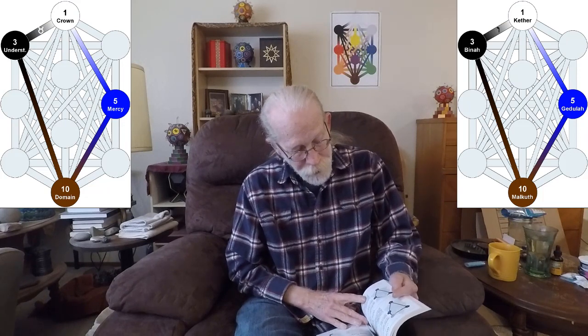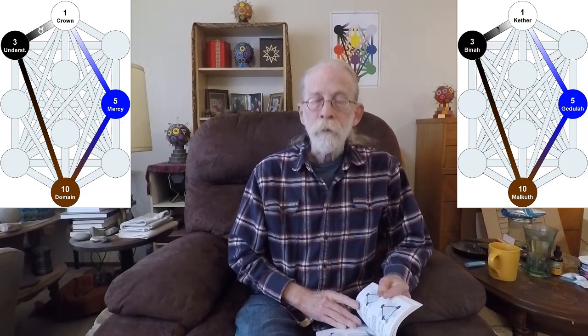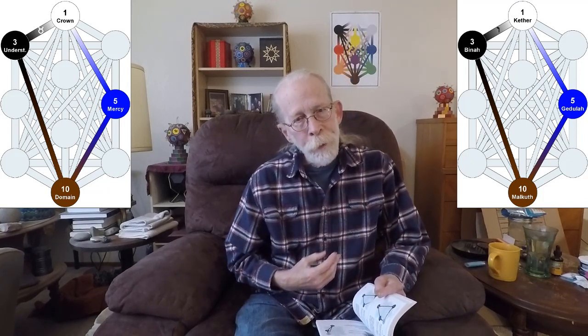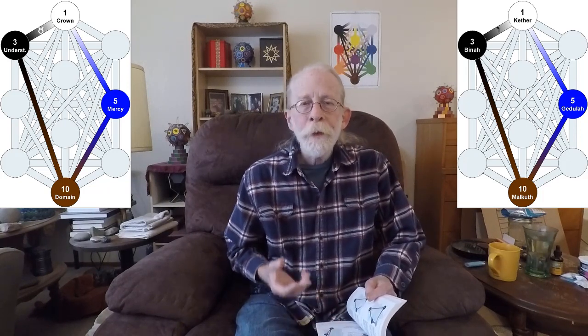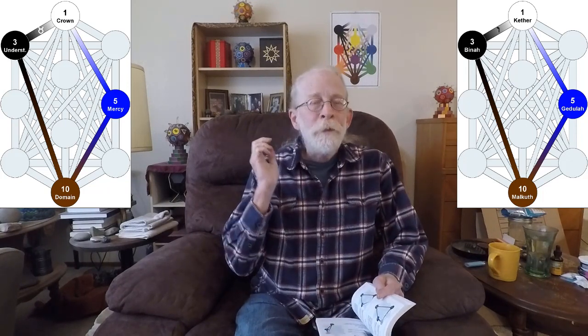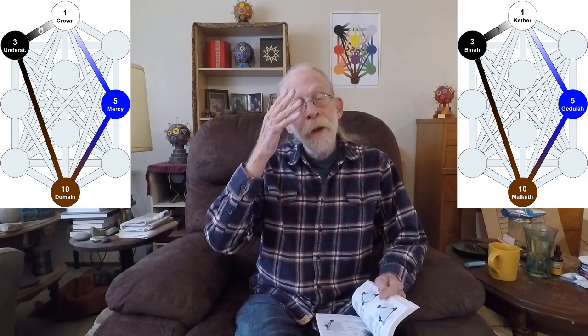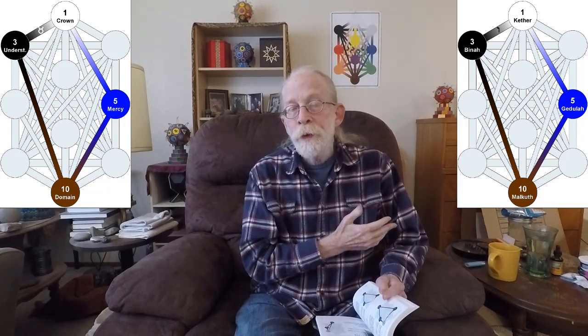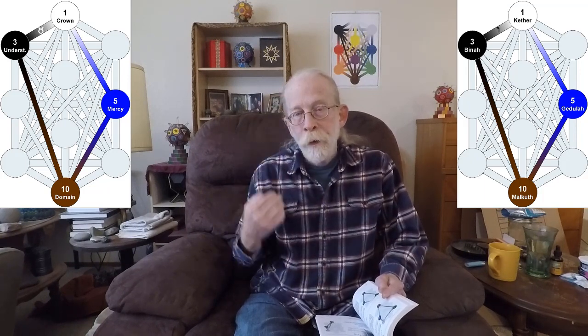The next gate, 116, is another quadrangle. And it again goes from Gedjula down that hidden path to Malkuth, up the hidden path to Bina, up Vav, Taurus, to Kether, and down that hidden path from Kether to Gedjula, and then back around.